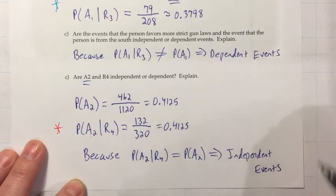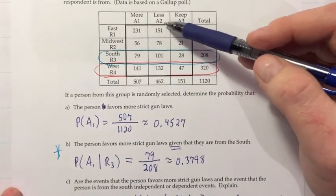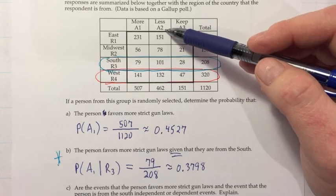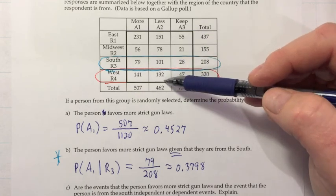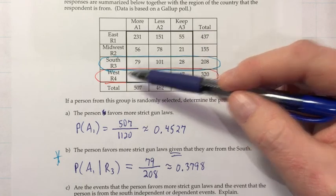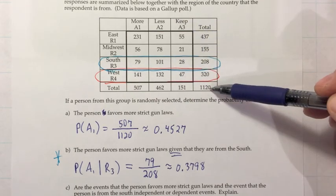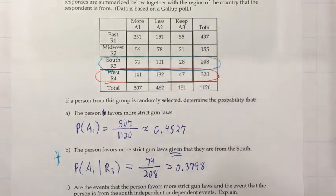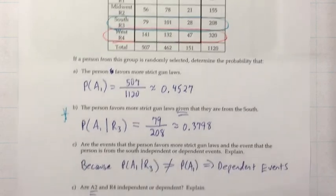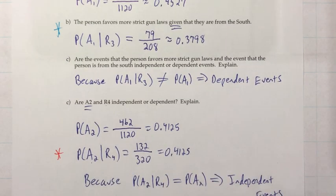And then just thinking about what that means in terms of the application. So A2 was the question of what's the probability somebody favors less gun control. And what we're saying here is it doesn't matter if you ask that question about the whole country, or if you just ask it about the West. In this group of people, you get the same answer. So among this group of 1120 people, whether they favor less gun control is independent of whether or not they live in the West, which is kind of interesting. For the other question, it mattered where they lived. For this one, it turns out it didn't. All right, that wraps up this section. Thank you.